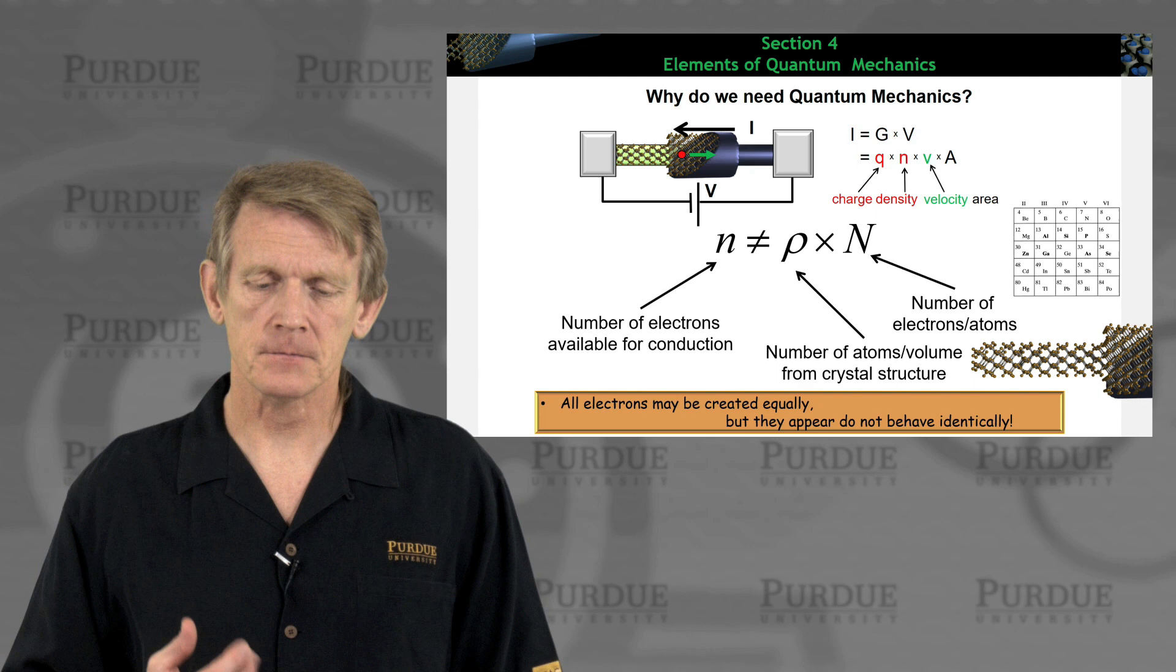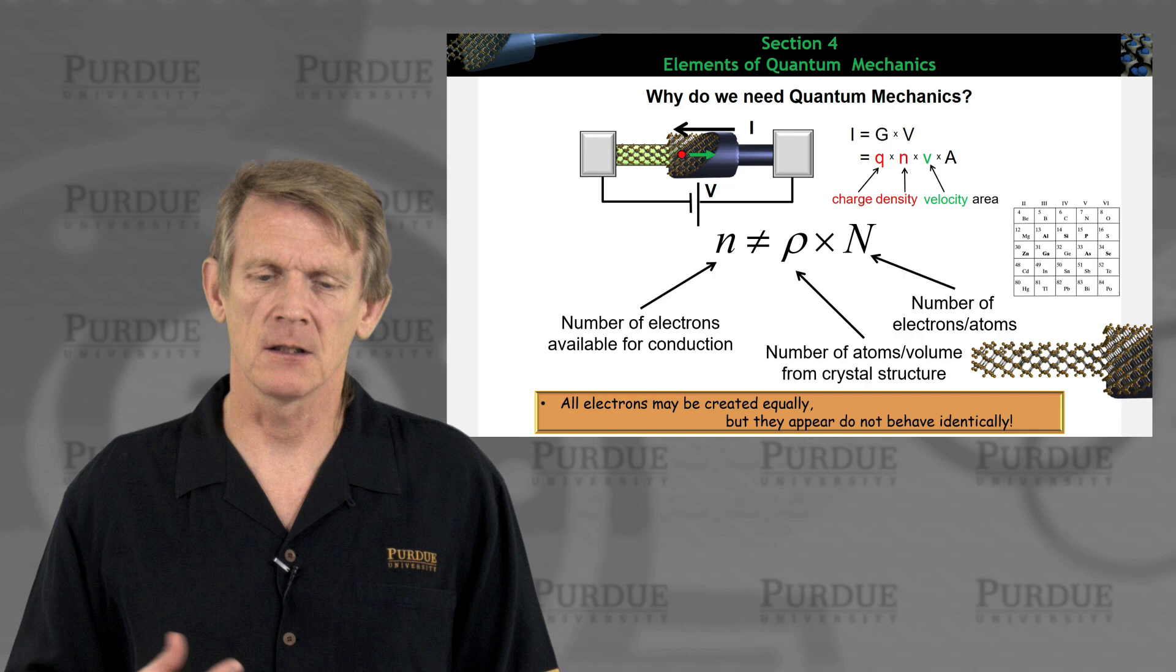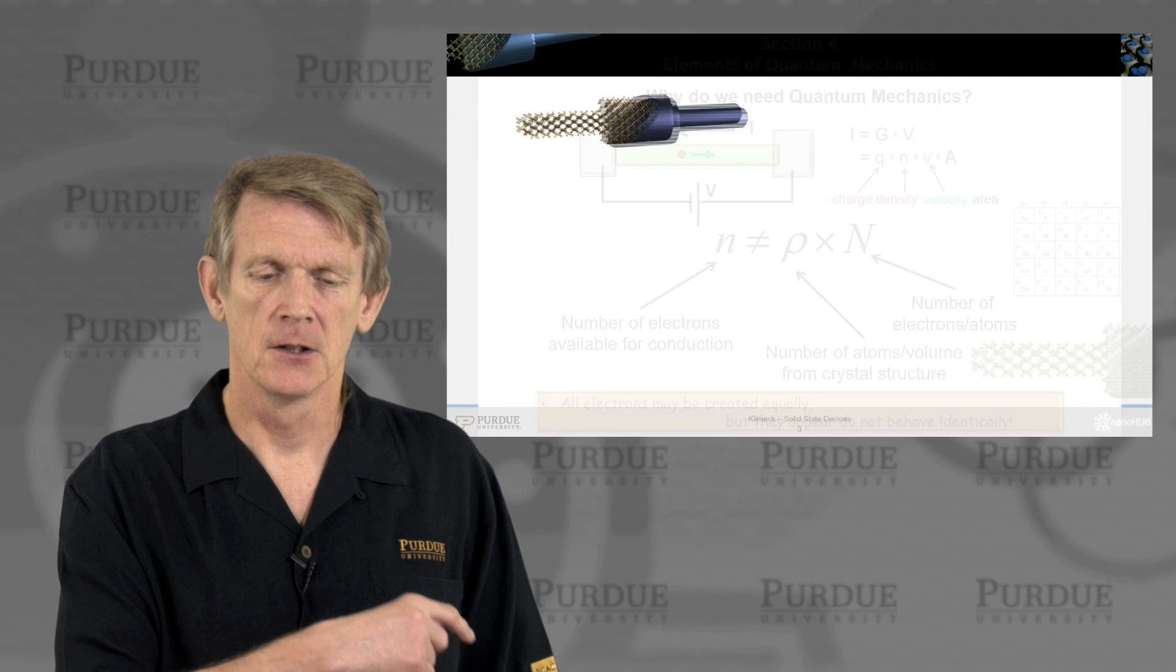So all the electrons, per se, are identical, but they don't behave the same. And we need to understand why that is, and we'll derive in section 5 and 6 models for that. But here we just lay some foundations on quantum mechanics and why that is relevant.